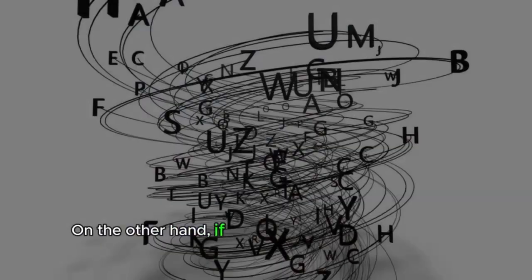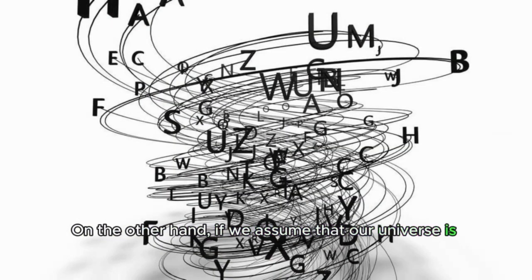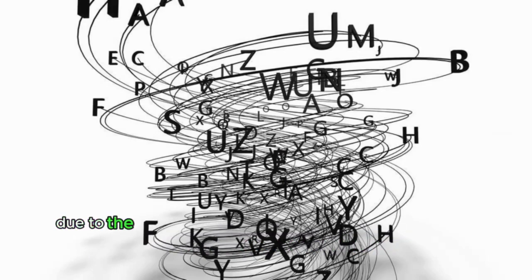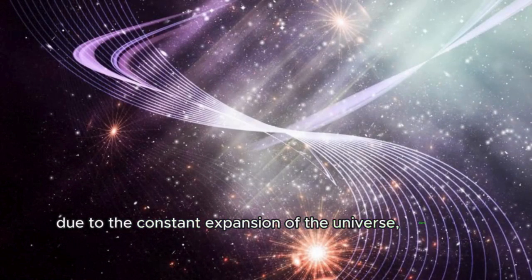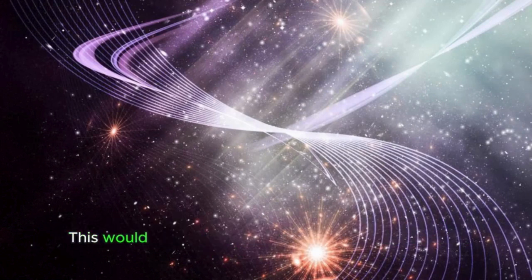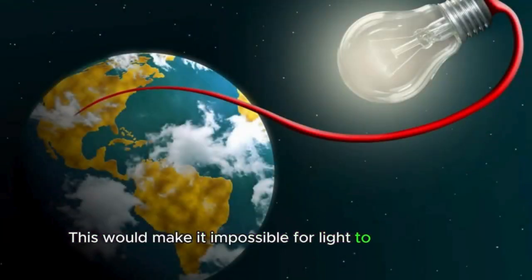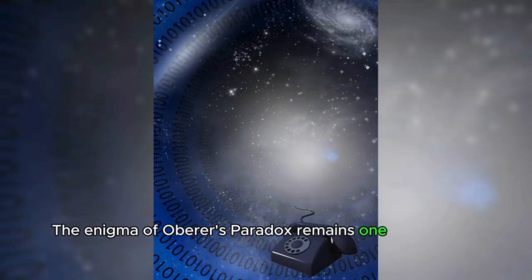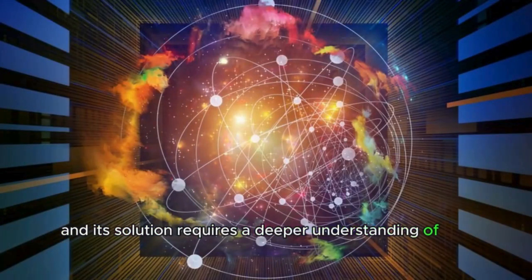On the other hand, if we assume that our universe is infinite, then it's quite natural that at some point, due to the constant expansion of the universe, stars and matter would begin to acquire a speed that exceeds the speed of light. This would make it impossible for light to reach Earth. The enigma of Olbers' paradox remains one of the most intriguing mysteries in cosmology, and its solution requires a deeper understanding of the nature and structure of our universe.